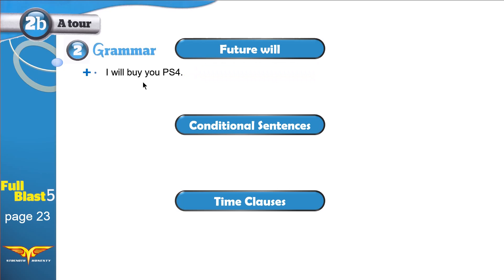I can use future will for promises — for example: I will buy you PlayStation 4. I can use it for predictions: It will rain today because we have dark clouds in the sky. I can use it for on-the-spot decisions: I will become a teacher when I grow up. I can use it to make offers: I will help you with your homework tonight. And for requests: Will you help me please with my homework?